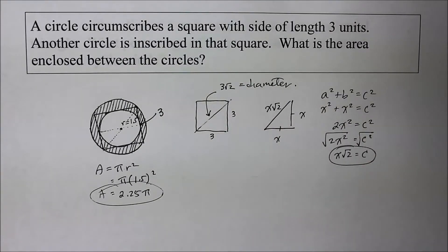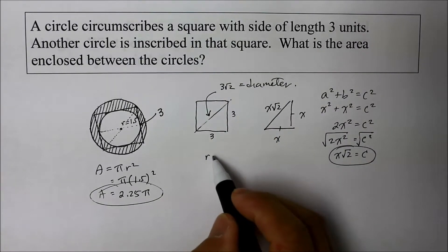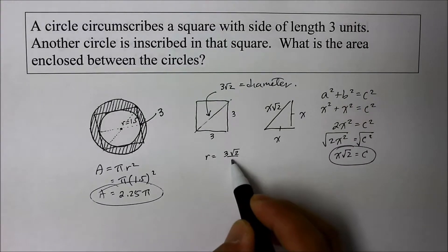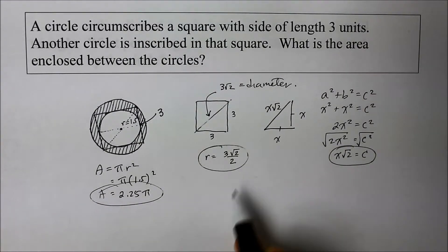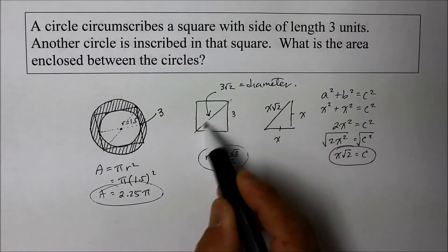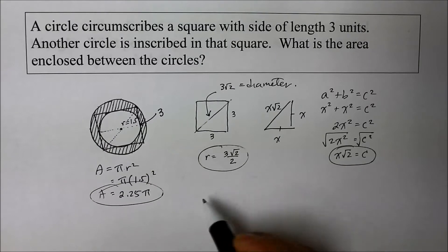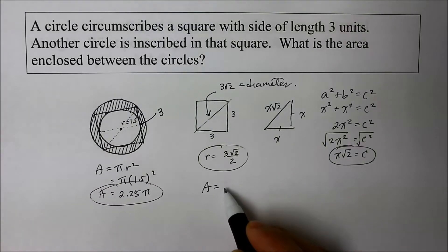However, we need a radius. And radius is simply half the diameter. So there it is. That's the radius of the diameter, or the diagonal. And so the radius is now 3 square root of 2 over 2. So now we could find the area of the big circle.